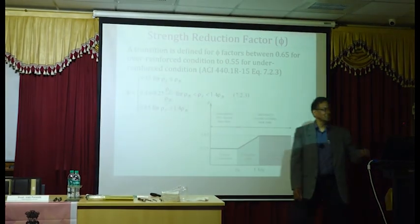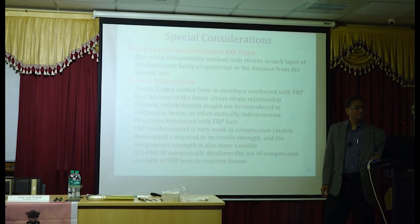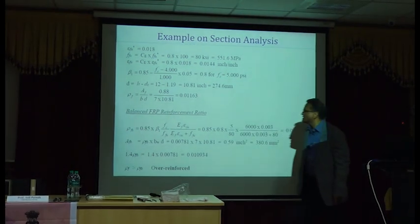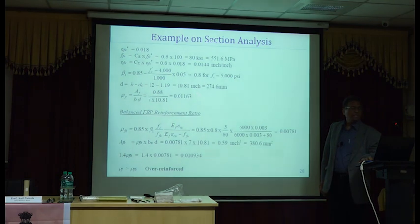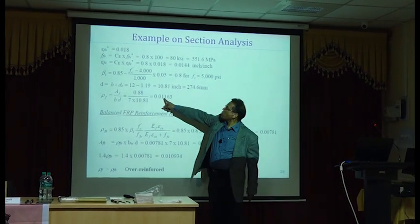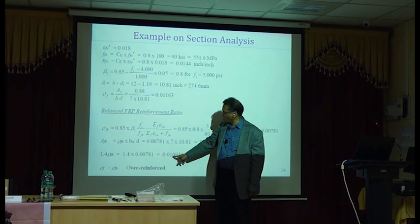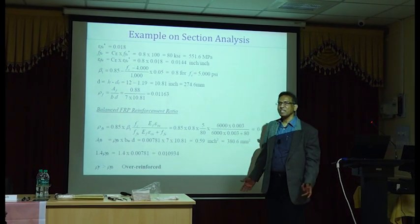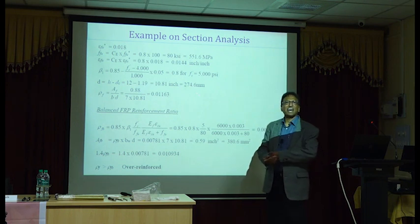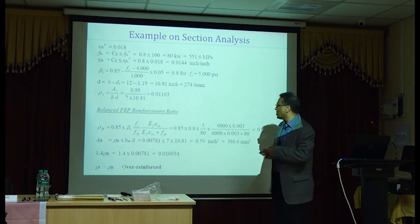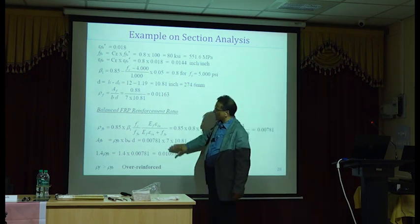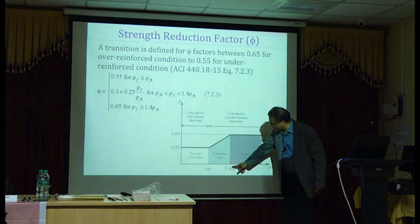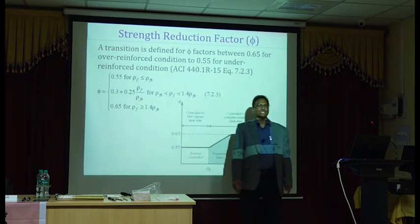In fact, for continuous beams, we normally do this. That's the detailing for continuous beams. In particular case, the standard says at least two bars shall be continued. That's right. Not all. Exactly. That's the reason that you don't continue every single bar. You may have to do that in FRP bars to reduce the development. So does it make sense? So, I need that 1.4 row FB, which is equal to 0.0109. So my actual row F is 0.01163. This is greater than 1.4 row FB. Therefore, my phi factor can be 0.65.